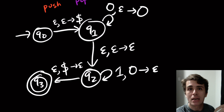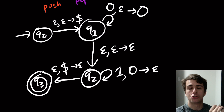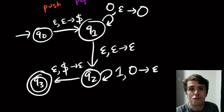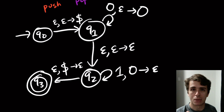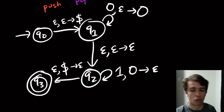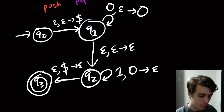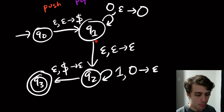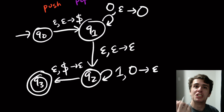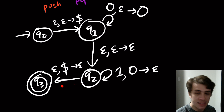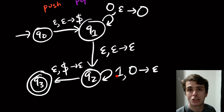The important thing is: do we reject all other strings? If a string is not of the form 0^n 1^n — either the counts are mismatched or there's a '10' substring — then let's check. If there are more zeros than ones, we push all the zeros, pop with the corresponding ones, but a zero is still at the top of the stack. We can't take the final transition and there's no input left, so the string is stuck and rejected.